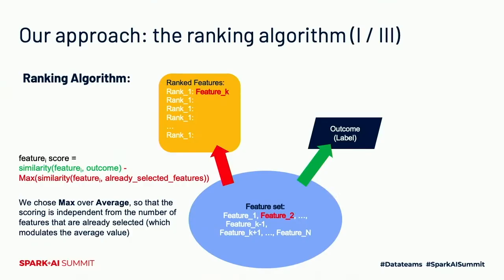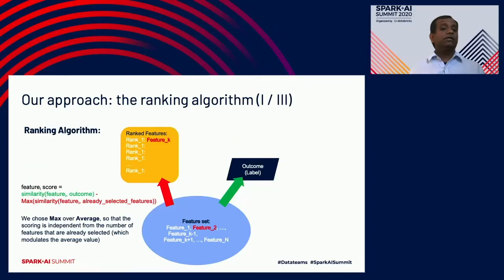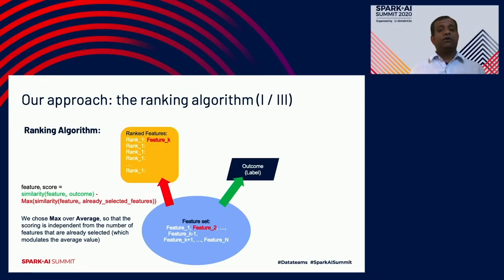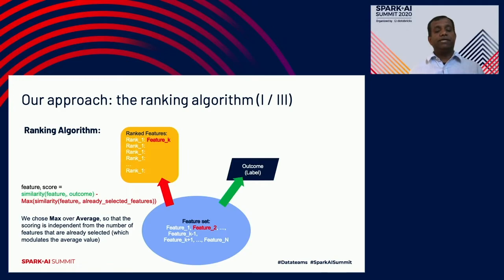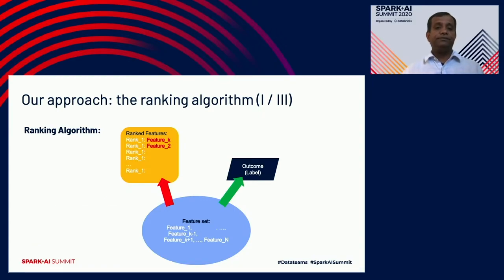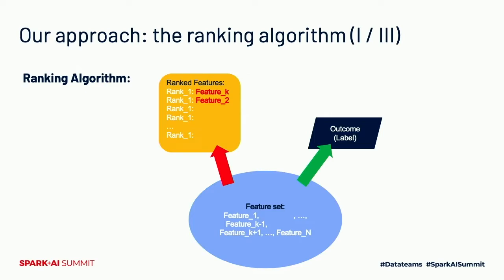Moving to the next feature: we pick feature two, which should have the highest correlation to the outcome label but the minimum correlation with features already in the ranked bucket. We penalize using the formula: score equals the absolute correlation of feature i with the outcome label, minus the max similarity of feature i with any feature already ranked. We chose max over average so scoring is independent from the number of features already selected. Feature two gets rank number two.